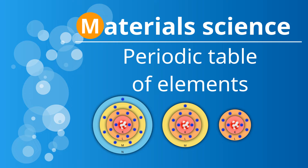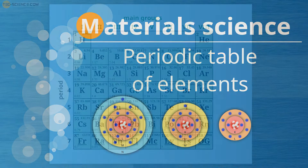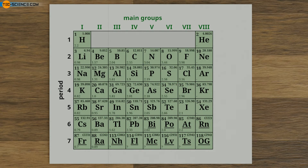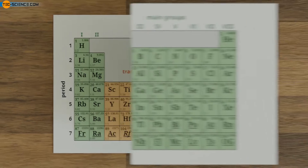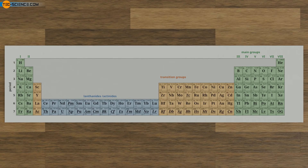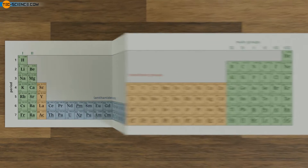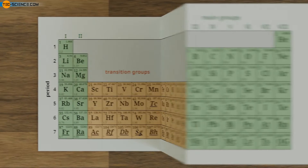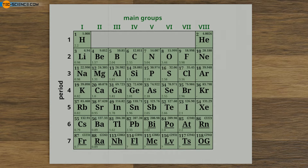Periodic Table of Elements. In the periodic table, all chemical elements are classified according to their atomic number and their chemical properties into main group elements and transition group elements. In the following, we will first take a closer look at the main group elements, and later in the video we will also include the transition group elements.